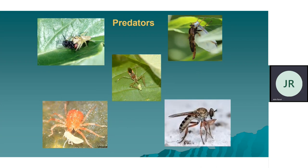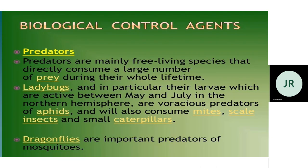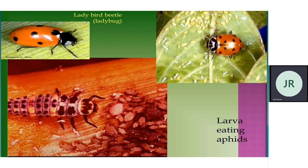Predators are free-living organisms that feed throughout their life on other animals and kill the prey. They are larger than the prey; immature and adult species feed on larvae, eggs, and adults. Examples of predators include spiders, some wasp species, and mites. Ladybird beetles are predators of aphids and will also consume mites, scale insects, caterpillars. Even dragonflies are very important predators and biological control agents to control the number of mosquitoes.